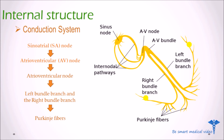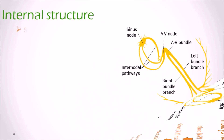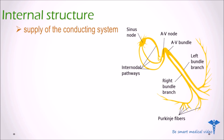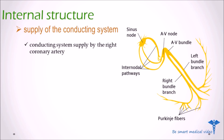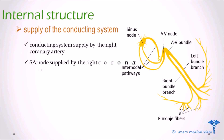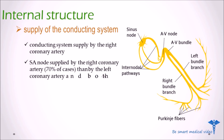The arterial blood supply of the conducting system of the human heart mainly comes from the right coronary artery, but all arteries of the right bundle branch are derived from the left coronary artery. The sinoatrial node is supplied by the right coronary artery more frequently — in 70% of cases — and by both coronary arteries in 30% of cases. This concludes the quick review of the human heart anatomy.